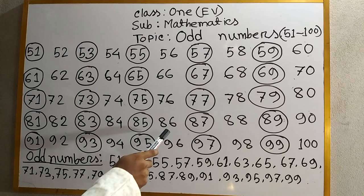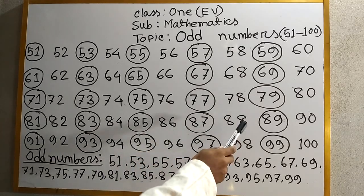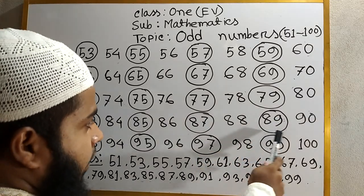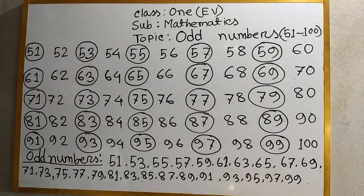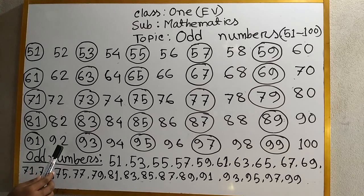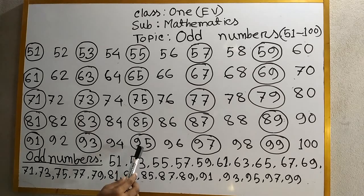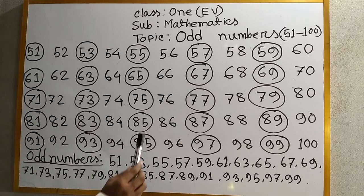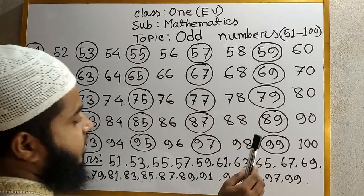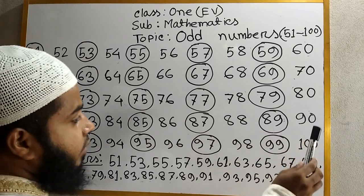87 odd number. 88. 89 odd number. 90. 91 odd number. 92. 93 odd number. 94. 95 odd number. 96. 97 odd number. 98. 99 odd number. And 100.